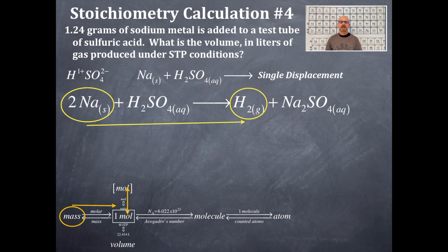And then from the moles of hydrogen, then I am going to go to volume of hydrogen because it's under STP conditions. That is STP, standard temperature and pressure. And recall that 1 mole is equal to 22.414 liters at STP only.